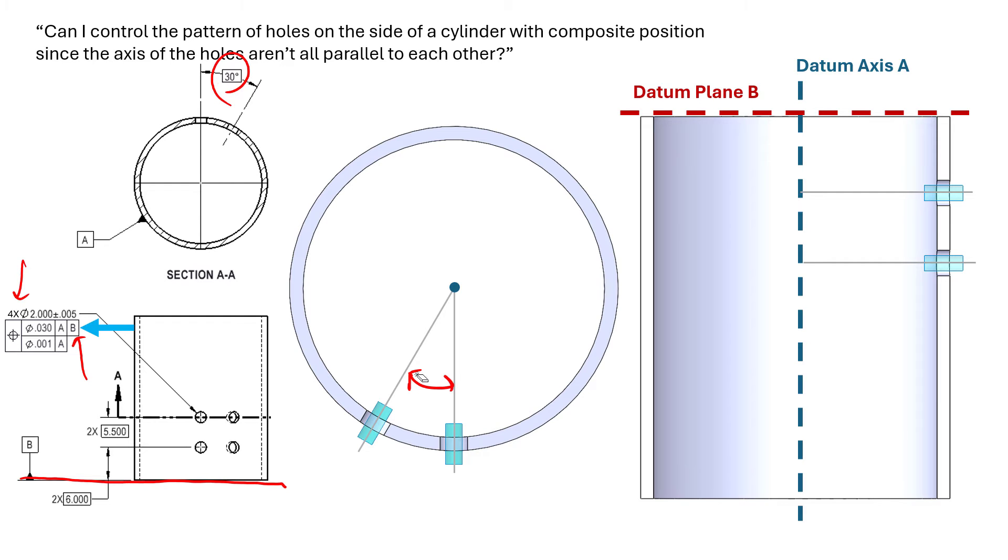Again, that upper frame here, we're showing the tolerance zone here and here, and then here and here for all four holes. Those tolerance zones are locked in locations centered at true position. True position again being defined by these gray areas, these gray lines, using basic dimensions.